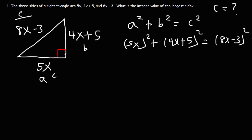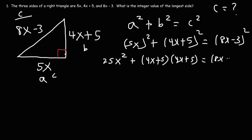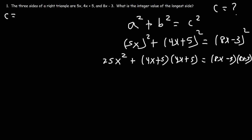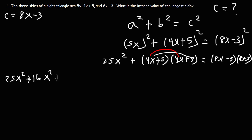5x squared gives us 25x squared. For (4x plus 5) squared, we FOIL the binomial: 4x times 4x is 16x squared, 4x times 5 is 20x, 5 times 4x is 20x, and 5 times 5 is 25. For (8x minus 3) squared, we also FOIL: 8x times 8x is 64x squared, 8x times negative 3 is negative 24x, negative 3 times 8x is negative 24x, and negative 3 times negative 3 is positive 9.